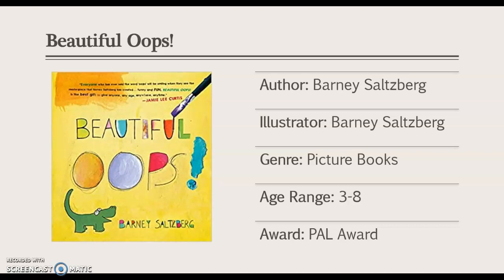This is an interactive picture book where students can lift the flaps and see that maybe a torn piece of newspaper, if you paint it, could look like a sweet little puppy dog. This picture book is great for students who maybe have issues with perfectionism or have trouble viewing mistakes as learning opportunities.